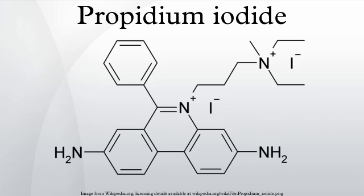Excitation energy can be supplied with a xenon or mercury arc lamp or with the 488 nm line of an argon-ion laser. Propidium iodide is used as a DNA stain for both flow cytometry, to evaluate cell viability or DNA content in cell cycle analysis, and microscopy to visualize the nucleus and other DNA-containing organelles.